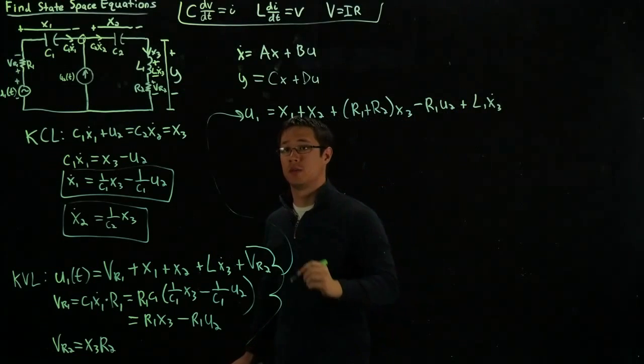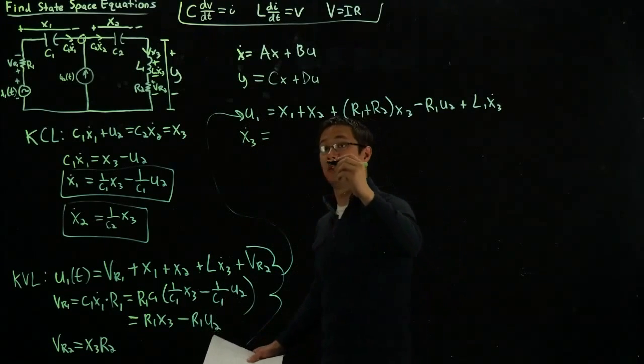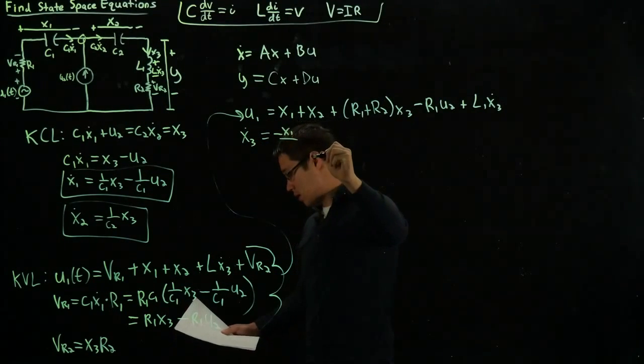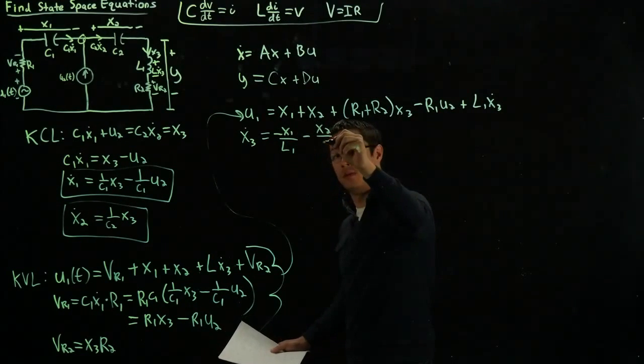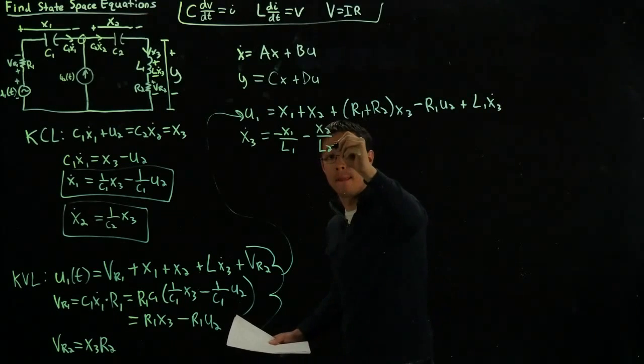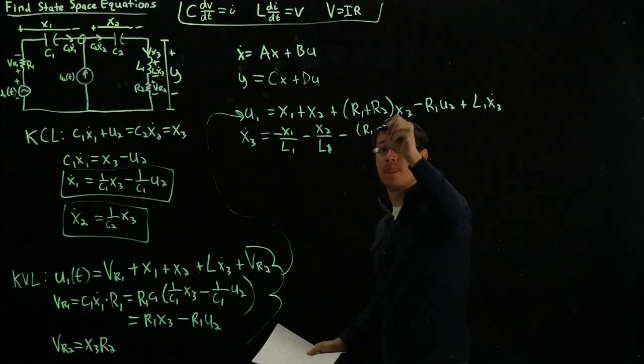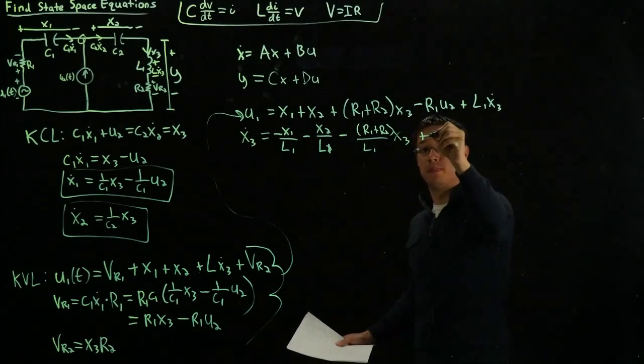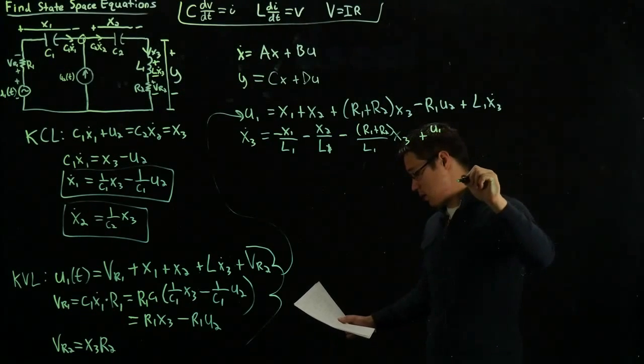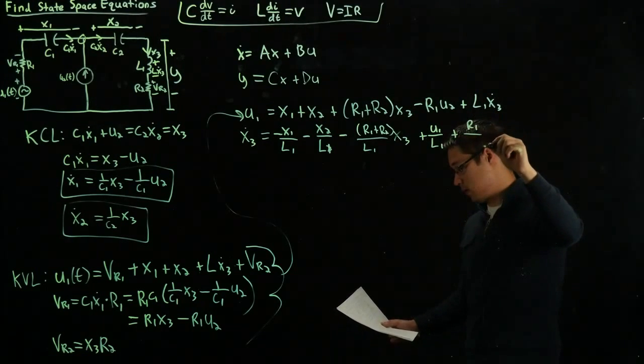Now, all we need to do is solve for x3 dot. Skipping some algebraic steps, we get x3 dot equals minus x1 over L1 minus x2 over L1 minus (R1 plus R2) over L1 times x3 plus U1 over L1 plus R1 over L1 times u2.